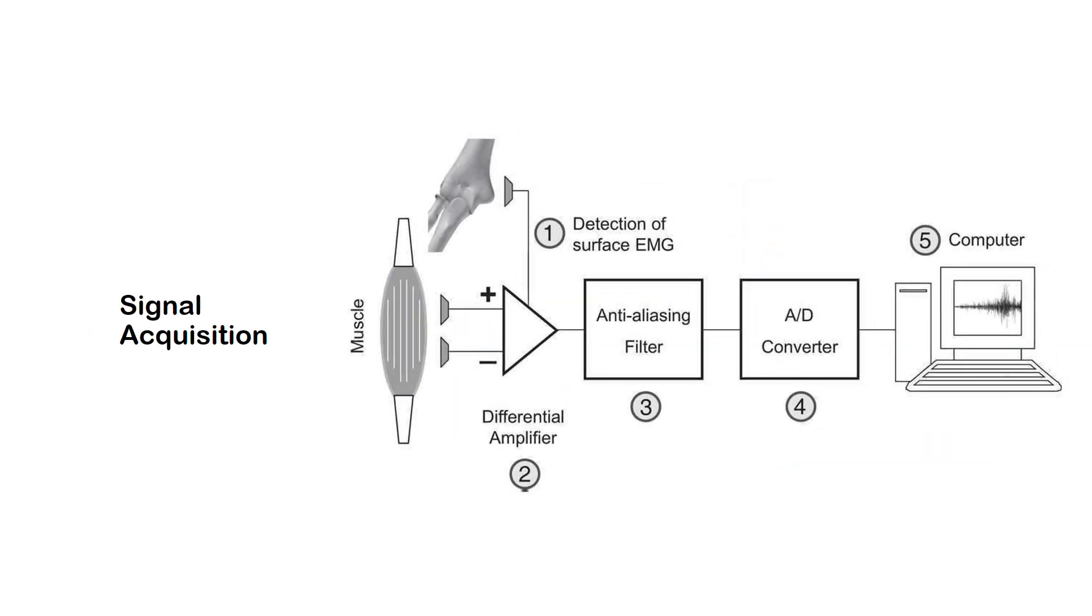How to acquire EMG signals? It starts with a motor unit that consists of a motor neuron and some muscle fibers.